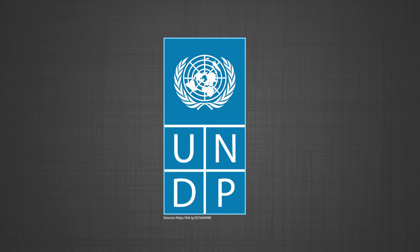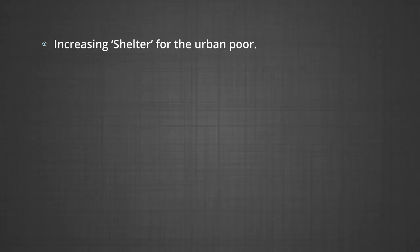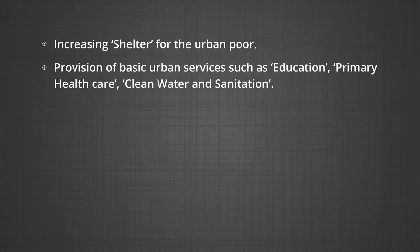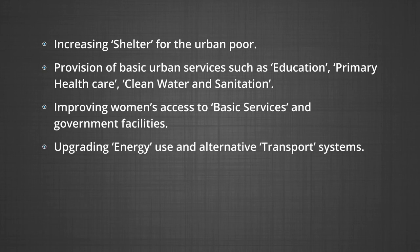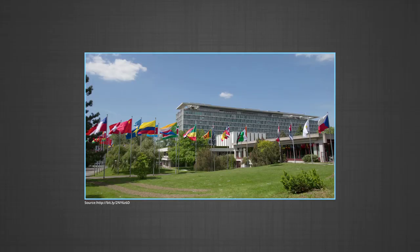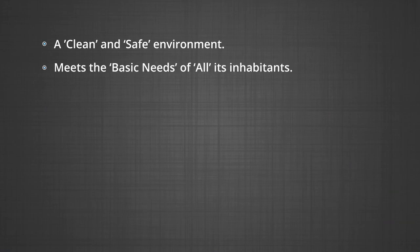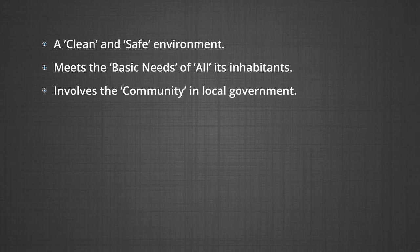Urban strategy: The United Nations Development Programme has outlined certain priorities for improving the lives of people living in urban settlements. These goals include increasing shelter for the urban poor; provision of basic urban services such as education, primary healthcare, clean water, and sanitation; improving women's access to basic services and government facilities; upgrading energy use and alternate transport systems; and reducing air pollution. The World Health Organization suggests that a healthy city must have a clean and safe environment, meet the basic needs of all its residents, involve the community in local government, and provide easily accessible health services.